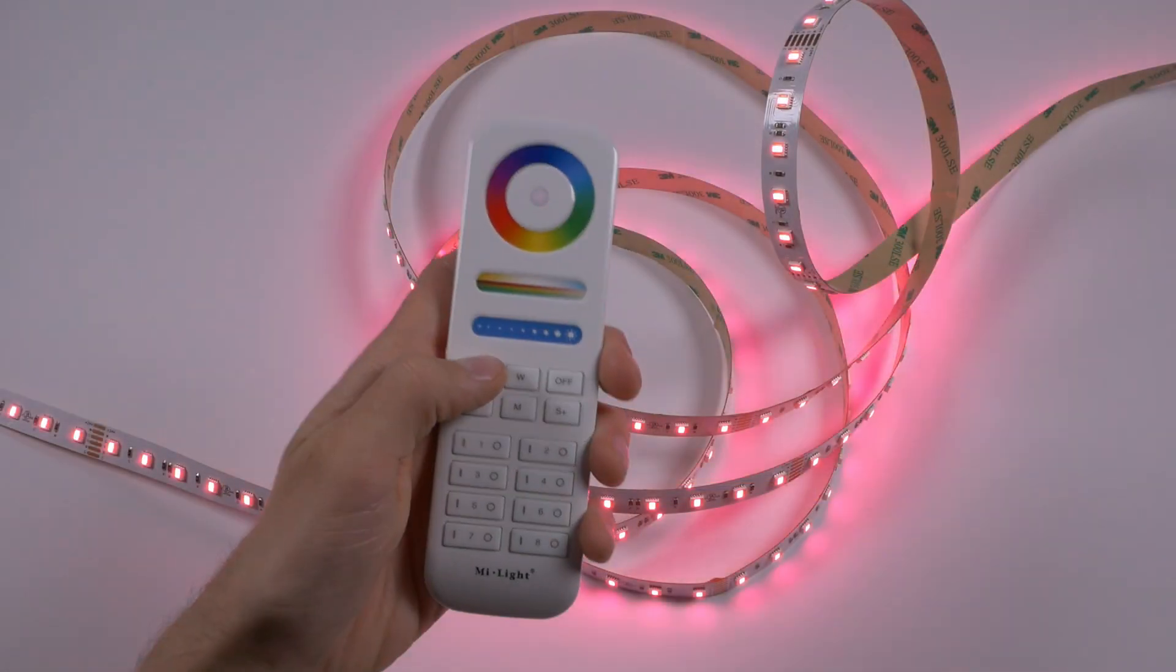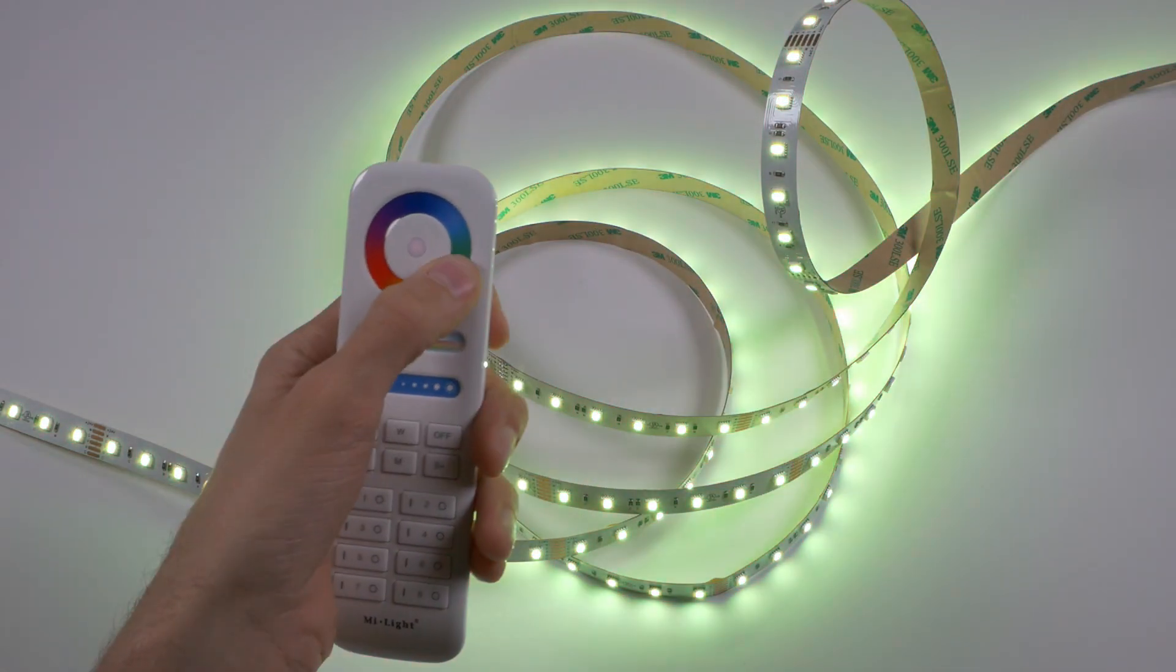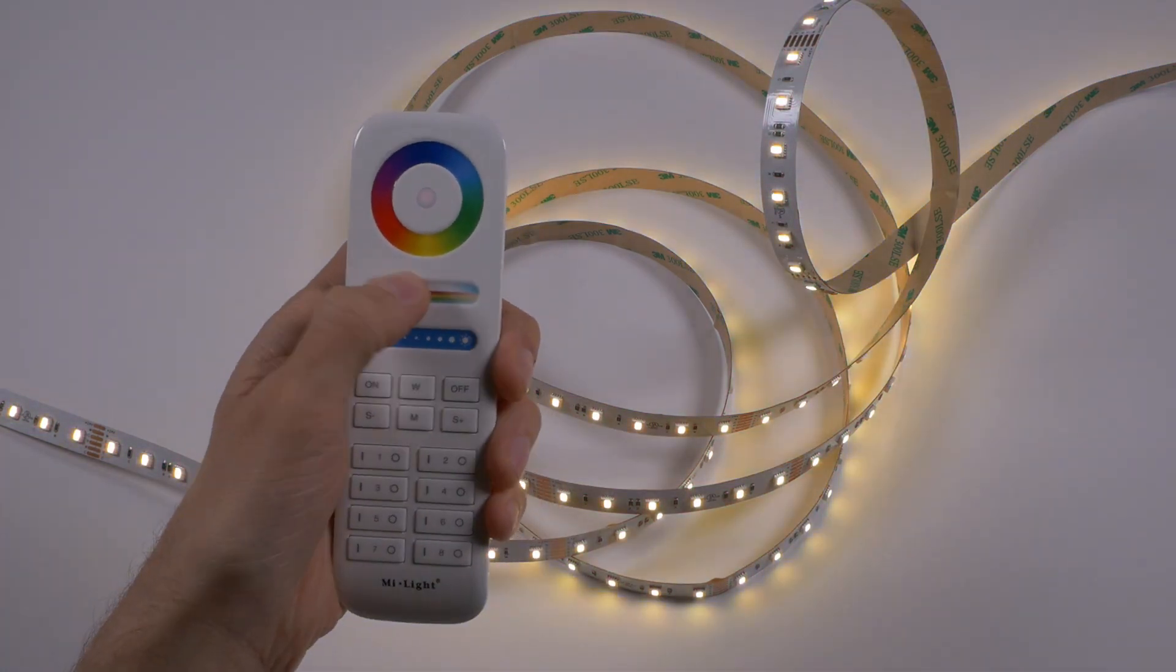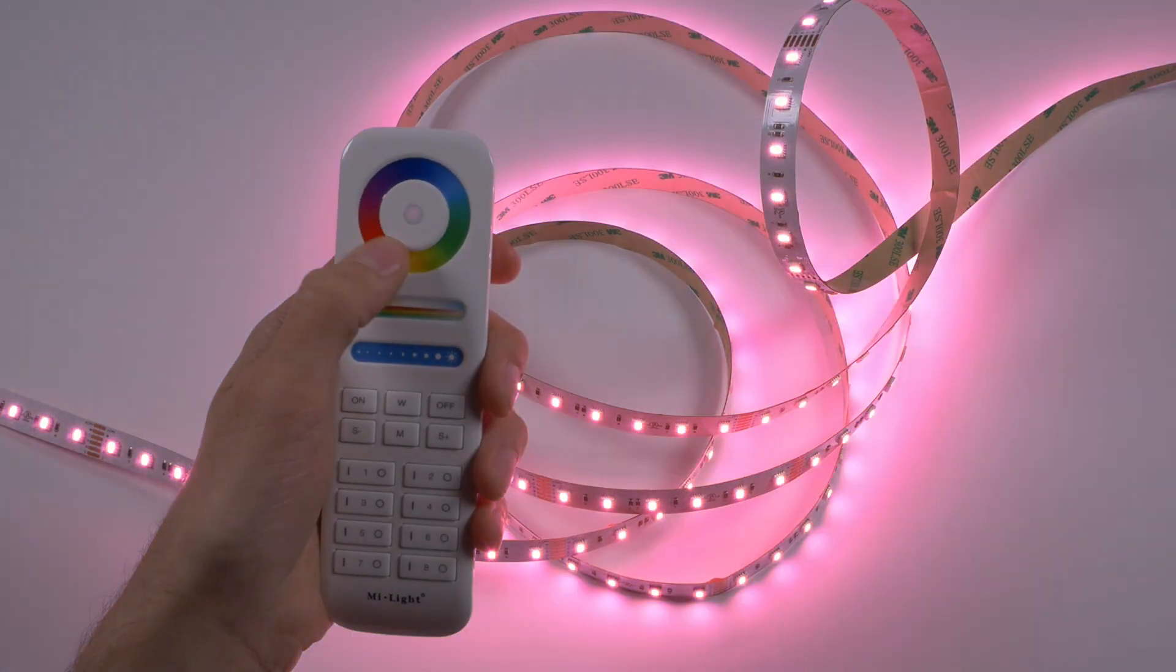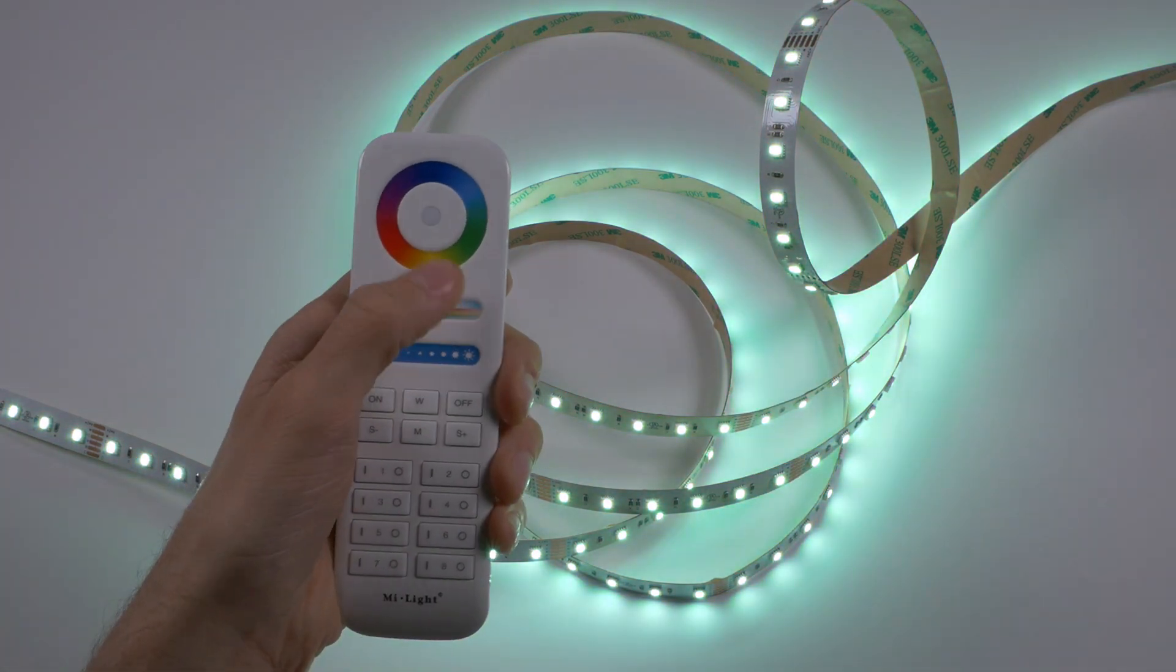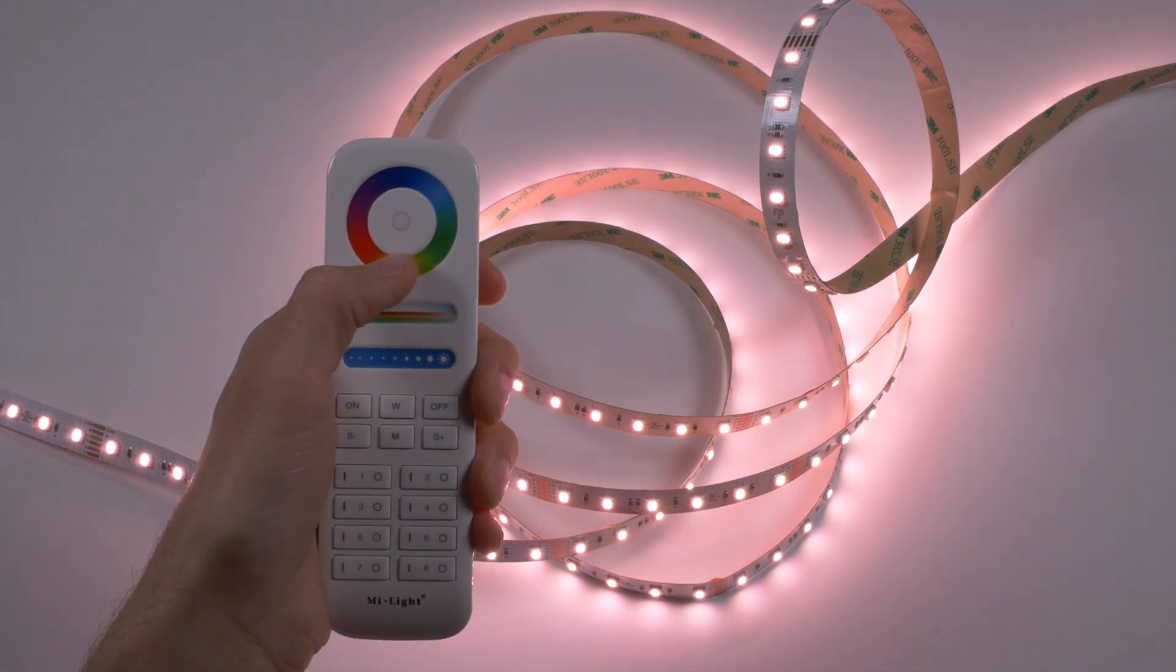When using RGBWW LED strip, you can not only mix and fade colors, you can also dim and change the color temperature of white light from warm to cool. You can even mix the white light together with color. This lets you create rich saturated colors or soft pastel-like hues. The lighting options are endless.